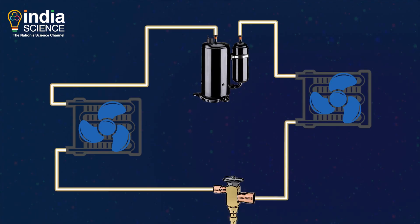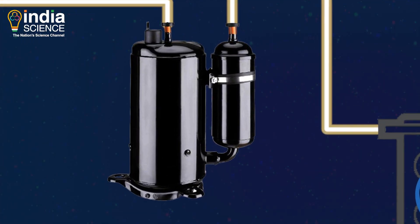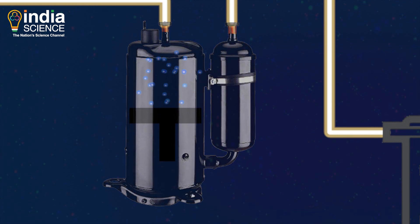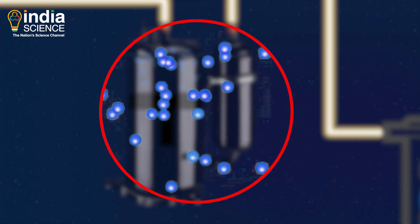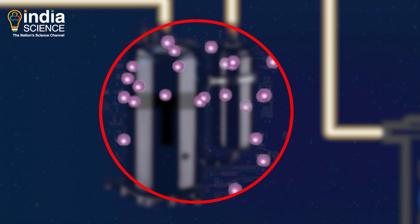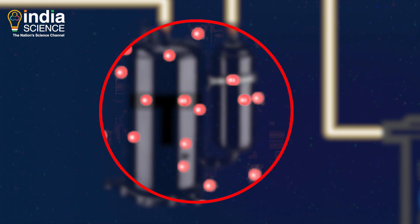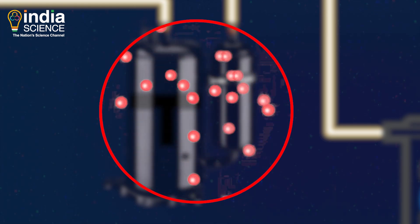Now, everything starts here at the compressor. You can think of it as the heart of Miss Chill. It compresses the refrigerant when it is in the gaseous form. It squeezes it very tightly. This raises the pressure in the gas and causes it to heat up.